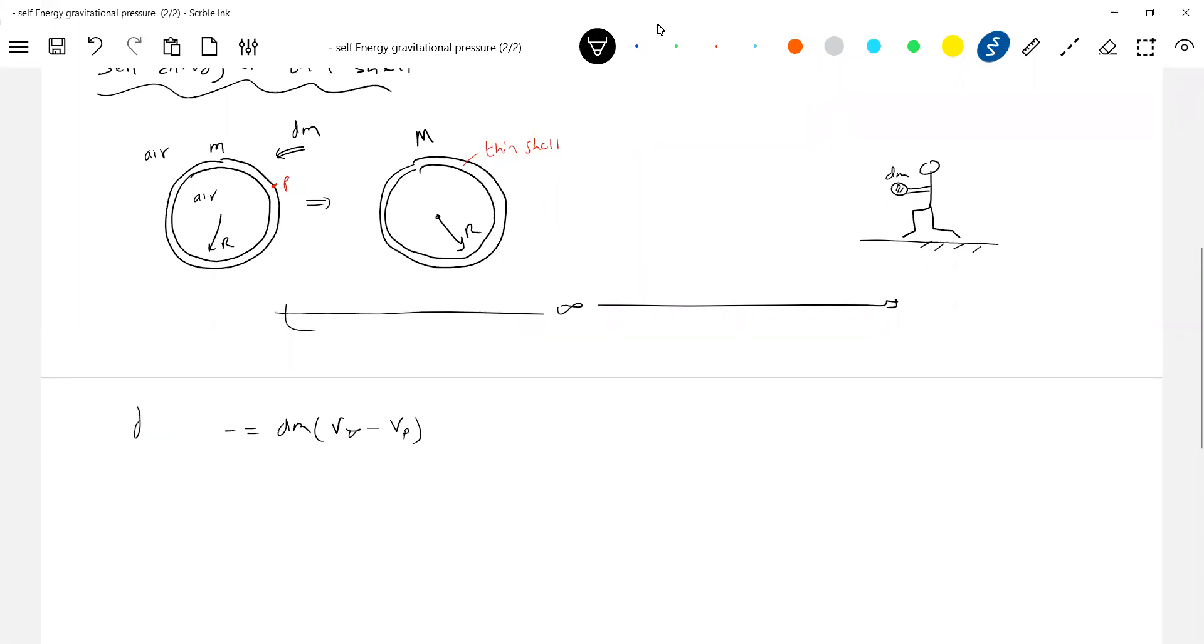And this will become Vp minus V infinity. What is the potential at infinity? Will be zero. Potential on the surface is how much? Minus Gm by R. So now this work done, I'll write only dW. dm times minus Gm/R. And what is the potential at infinity due to this shell? Will be zero. So this work I did will be available as self energy.